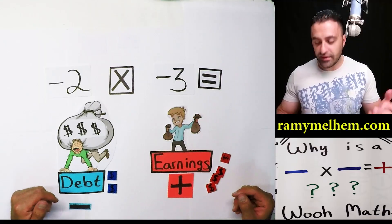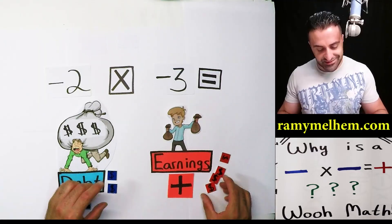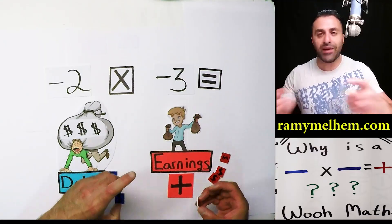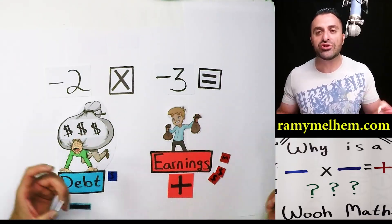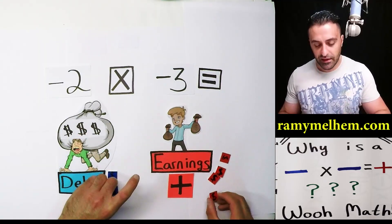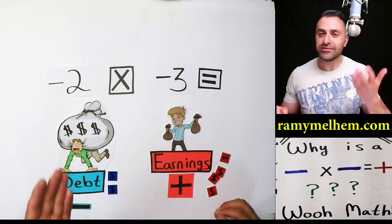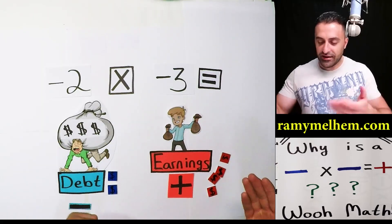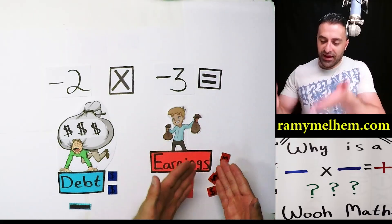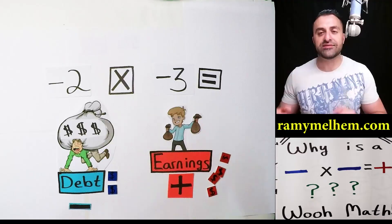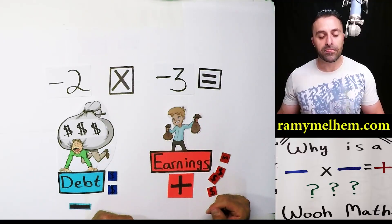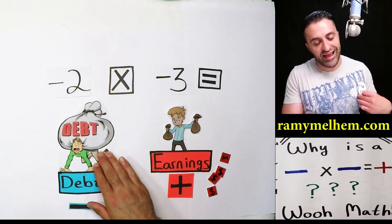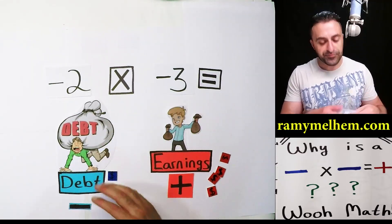This is borrowed money. They could both buy something — this is a dollar, this is a dollar. You could buy a bag of chips with both of them. But this money is not his, it's the bank's. And this money is not the bank's, it's his. We all experience this debt every time we go and buy stuff with our credit card.